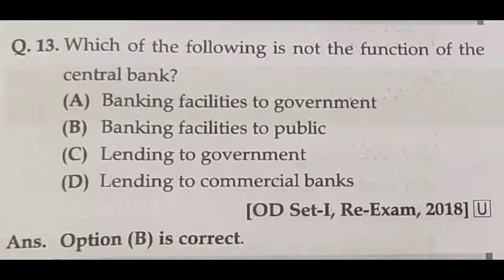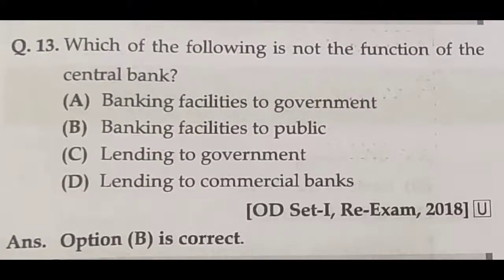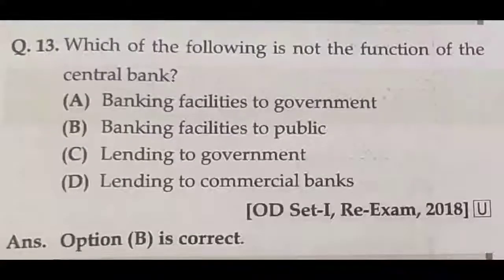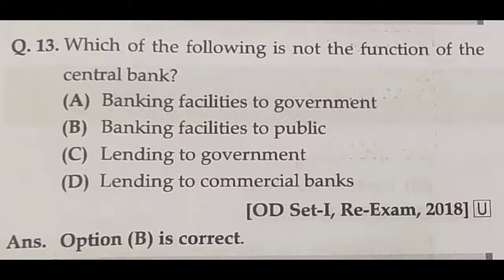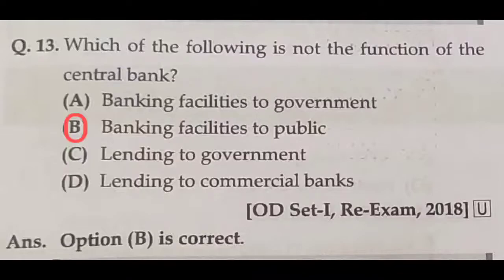Question number thirteen: which of the following is not a function of the central bank? Banking facility to the government — that is a function of the central bank. Banking facility to the public — that is not a function of the central bank. Lending to government — that is a function. Lending to commercial bank — that is a function. So the answer is banking facility to the public — option B is the correct answer.